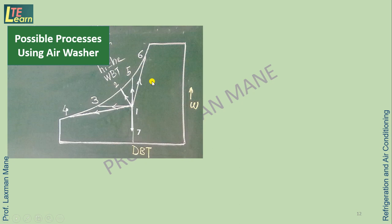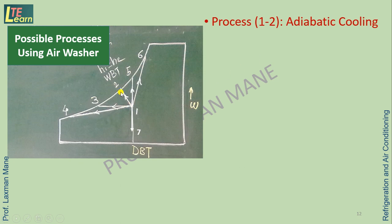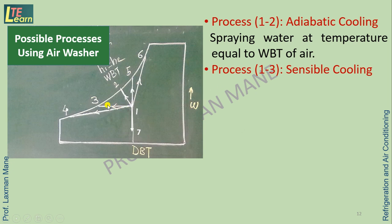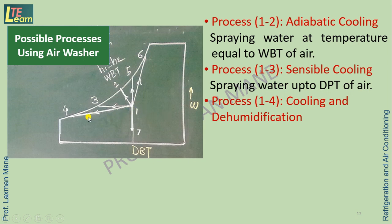The possible processes with the help of an air washer are: Process 1 to 2 — adiabatic cooling — occurs when water is sprayed at a temperature equal to the wet bulb temperature of the entering air; there is no change in enthalpy (H1 = H2). Process 1 to 3 — sensible cooling — is possible by spraying water up to the dew point temperature of air. Process 1 to 4 — cooling and dehumidification — is done by using water below the dew point temperature of air.